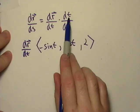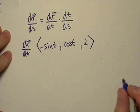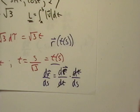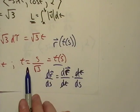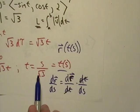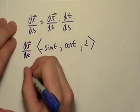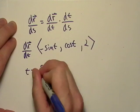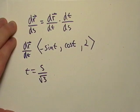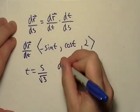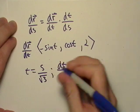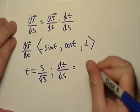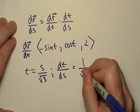Now we need DT/DS. Well, let's go back here and let's see here. We found out that T, through parameterization, was equal to S over square root of three. So T was equal to S over square root of three. So I think you can figure that one out pretty easily, and that's just one over square root of three.